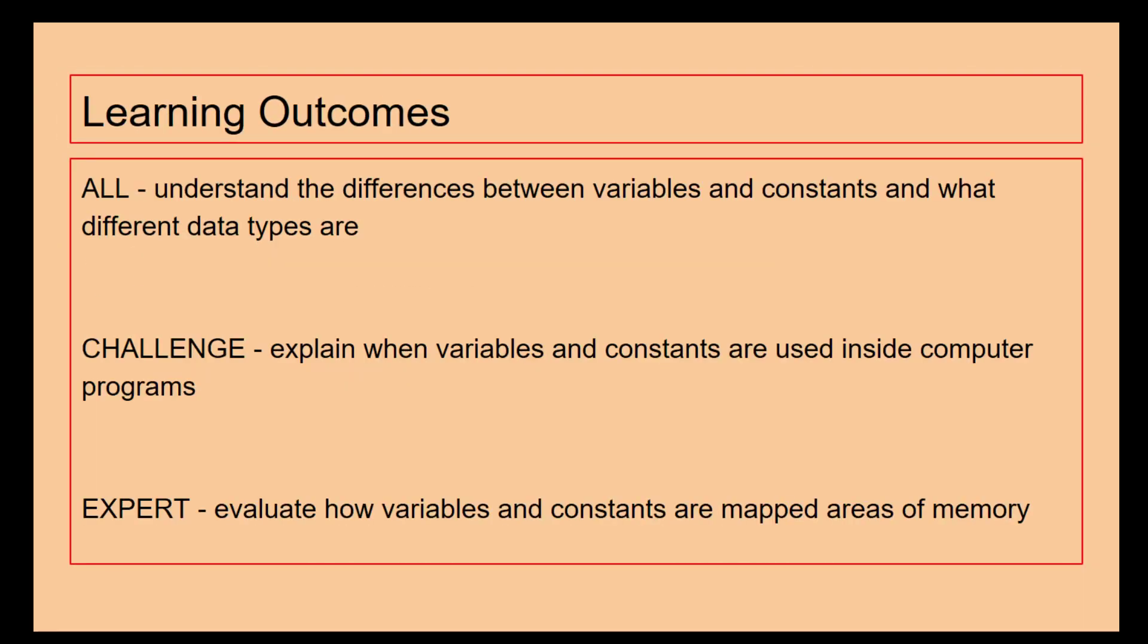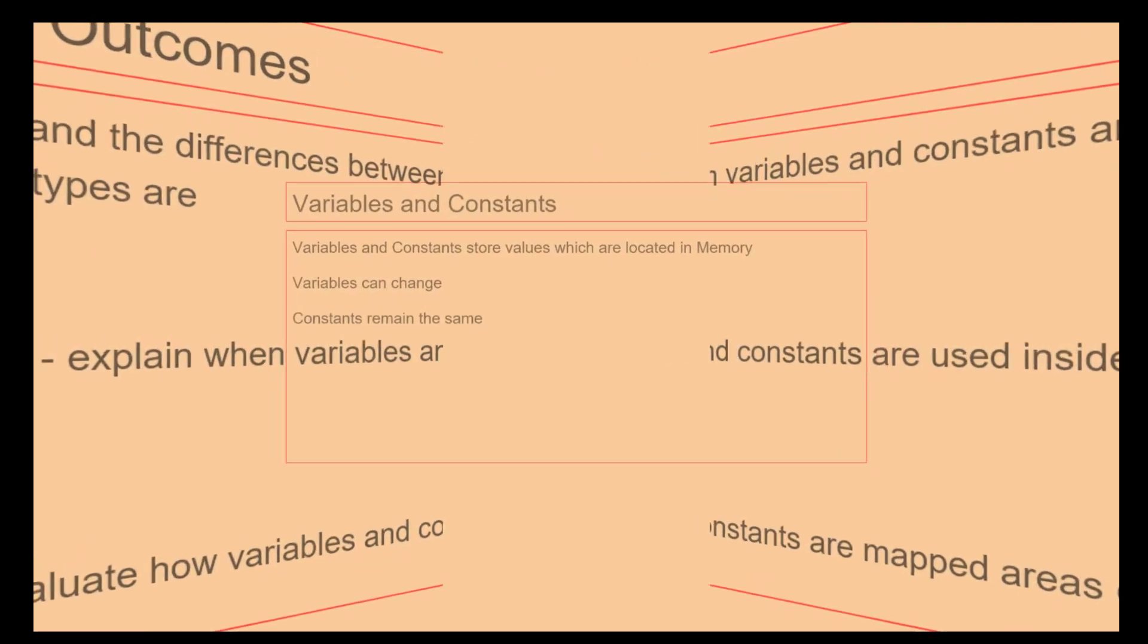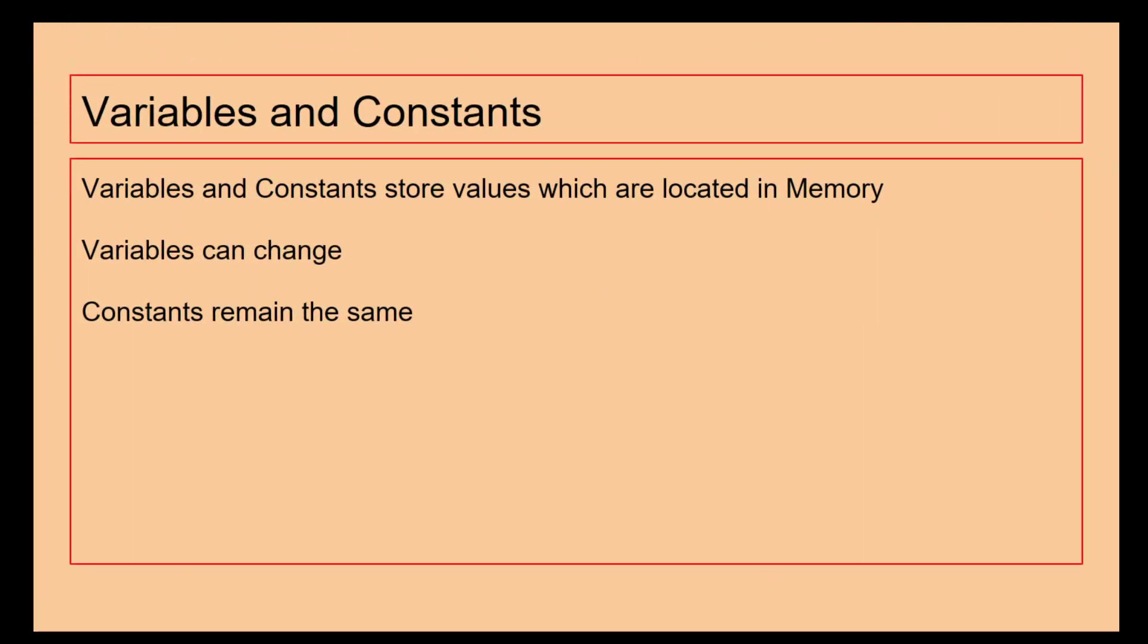So let's get cracking. Learning outcomes for today you can see there so you can see where the pitch of the lesson is, what the challenge is going to be. So variables and constants are stored values which are located in memory. When we are creating something in Python or Java, variables and constants are values which are then stored elsewhere and you can make reference to them, you can use them, you can call them, you can edit them, you can delete them.